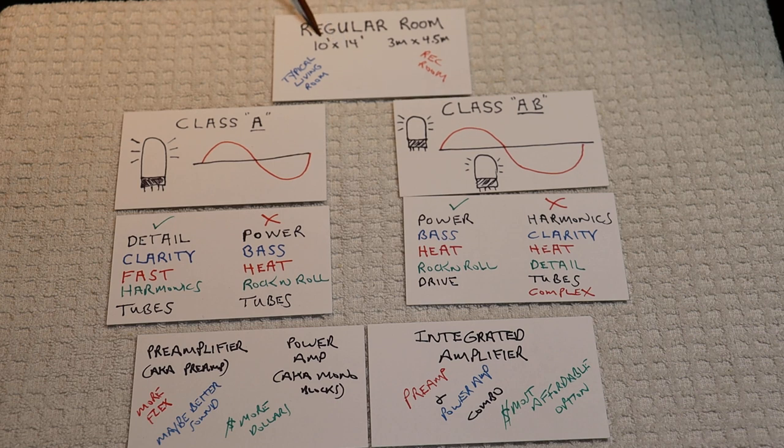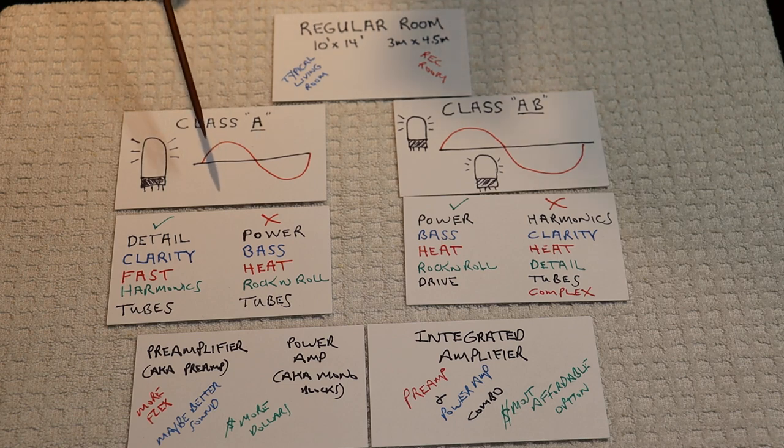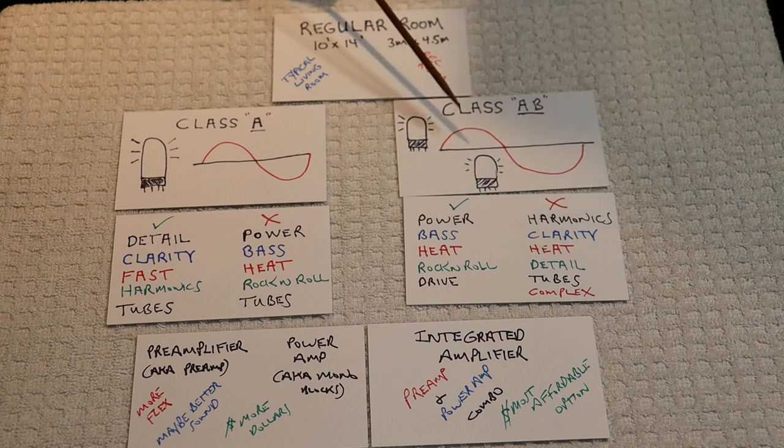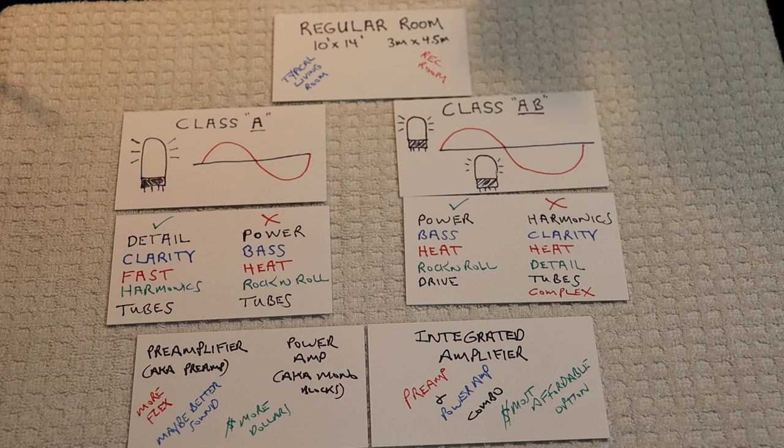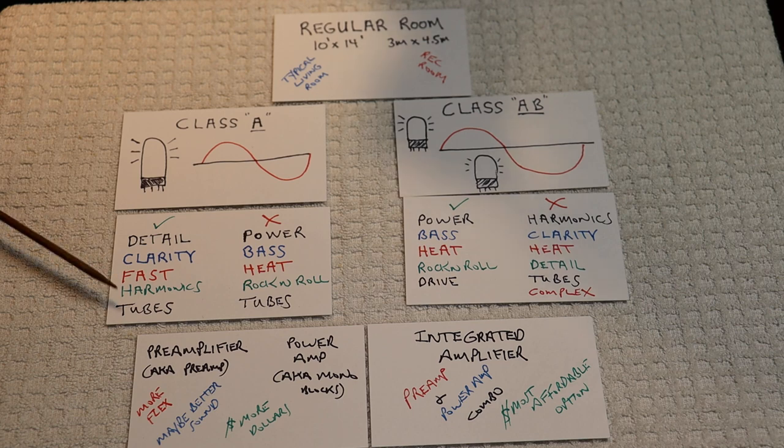Let's run through the options. Presume you've got a regular-sized listening room. You've got two very broad categories of amps to choose from: Class A and Class AB. Class A amps tend to be simpler, fewer tubes, lower power. Class AB tend to have more tubes, sometimes many more tubes, and they tend to have more power. With a Class A amp, you're going to get great detail, clarity, a very fast sound.